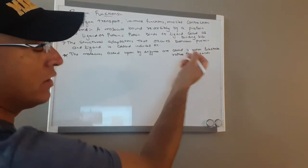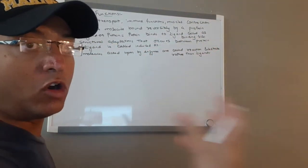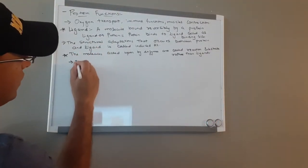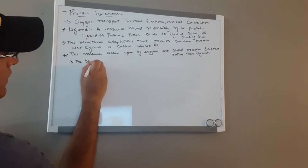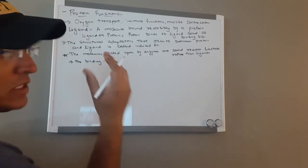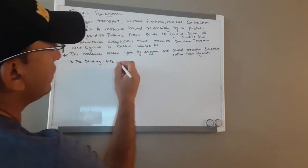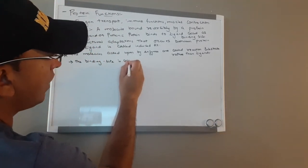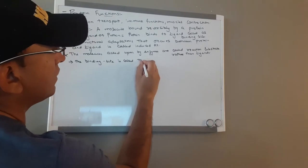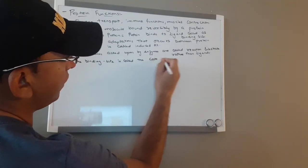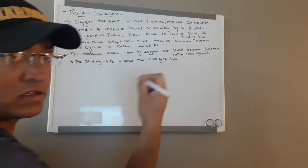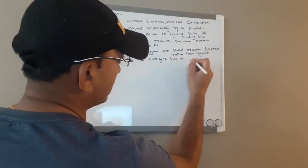The binding site for an enzyme and its molecule is not called the binding site — it is called the catalytic site, or active site.